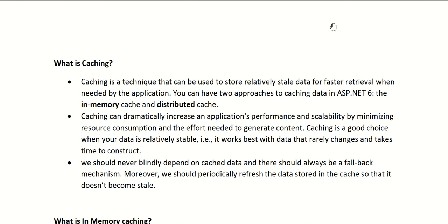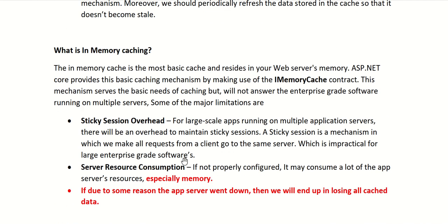What is in-memory caching? The in-memory cache is the most basic cache and resides in your web server's memory. ASP.NET Core provides the basic caching mechanism by making use of the IMemoryCache interface. This mechanism serves the basic needs of caching but will not answer the requirements of enterprise-grade software running on multiple servers.